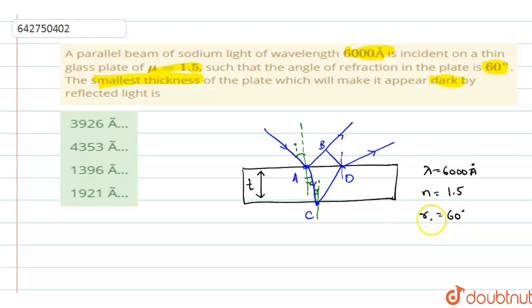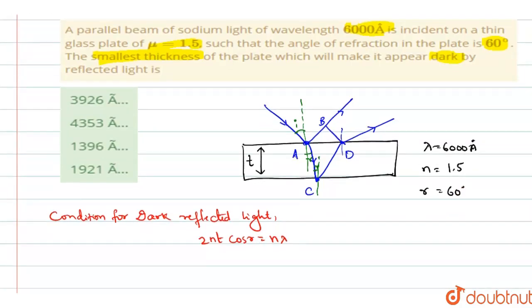Now in the case of such kind of process, the refracting if it is taking place through a thin glass plate, the refraction condition is that when these two light waves interfere and they produce an interference pattern. So in this case, if they interfere, the condition for dark reflected light will be, you will write it as 2NT cos R is equal to N lambda, where N is the number.